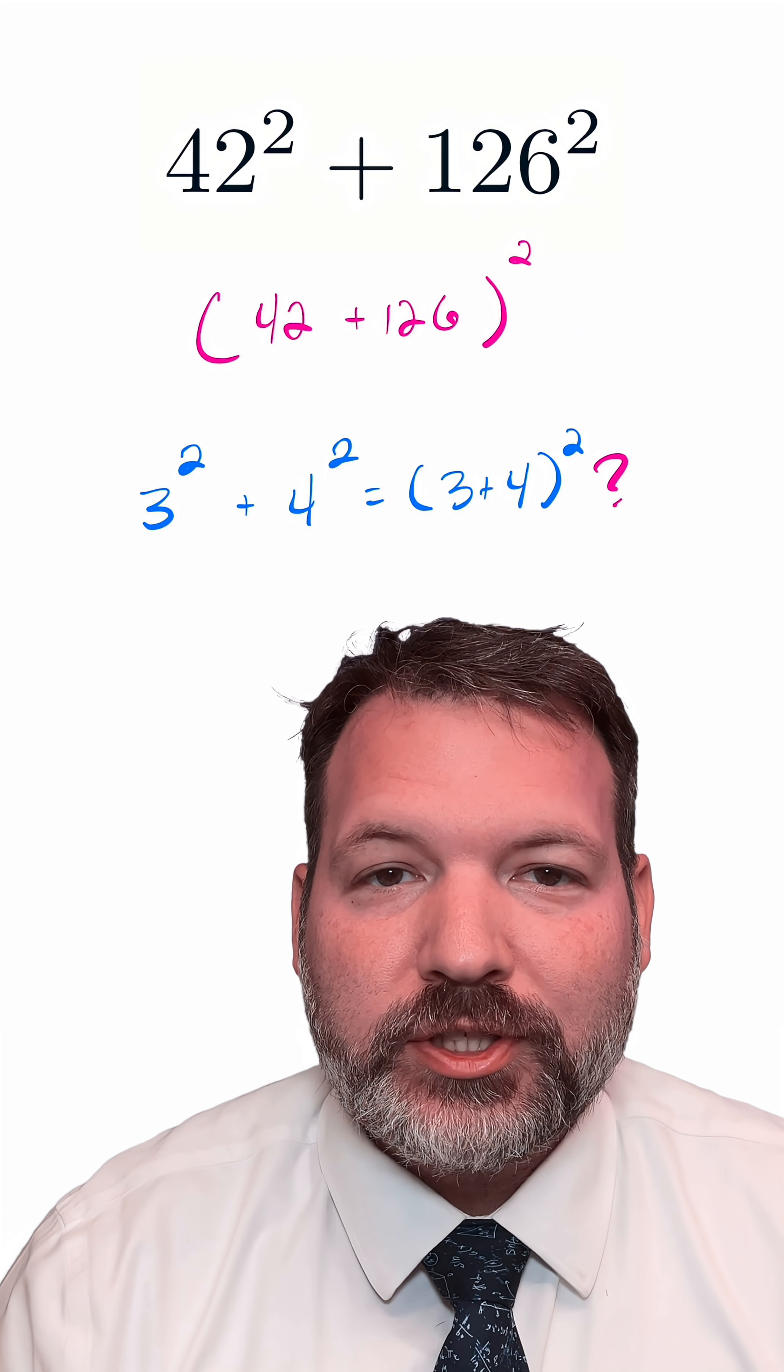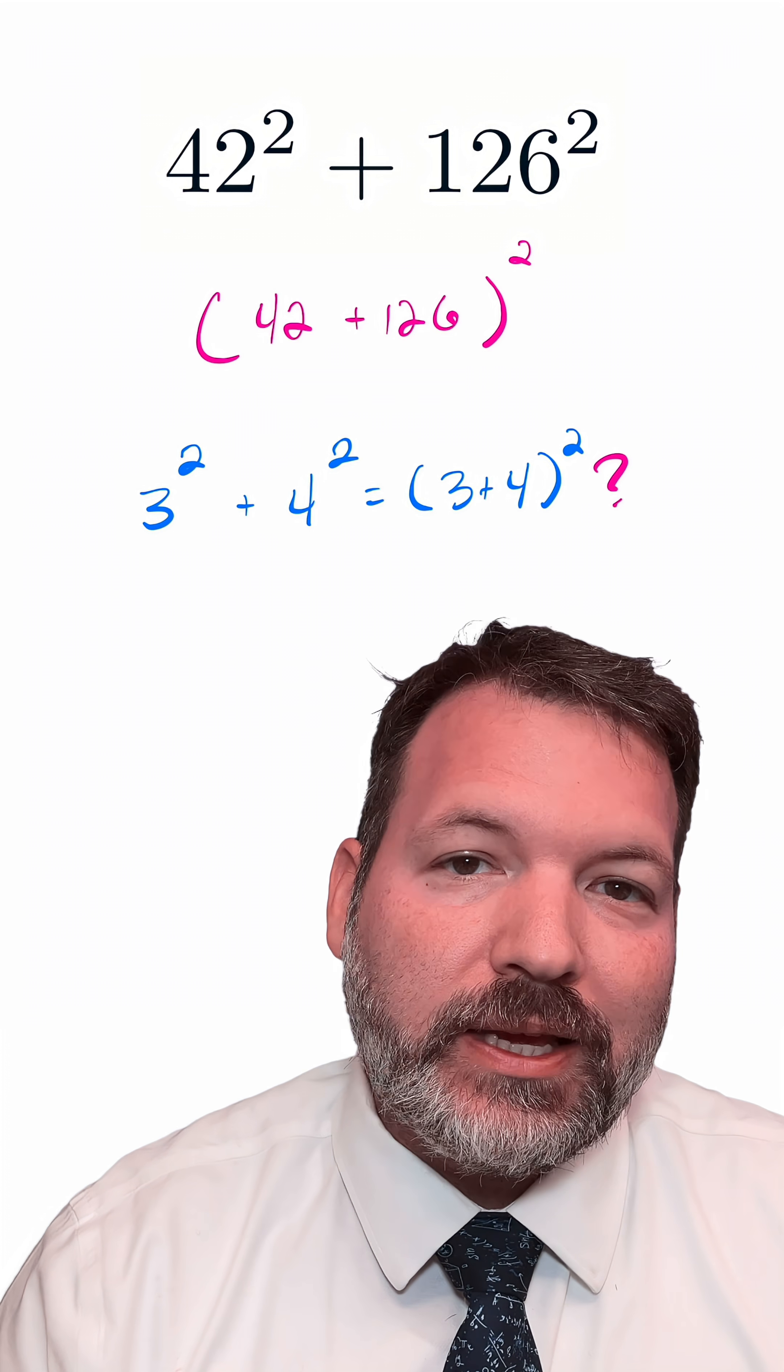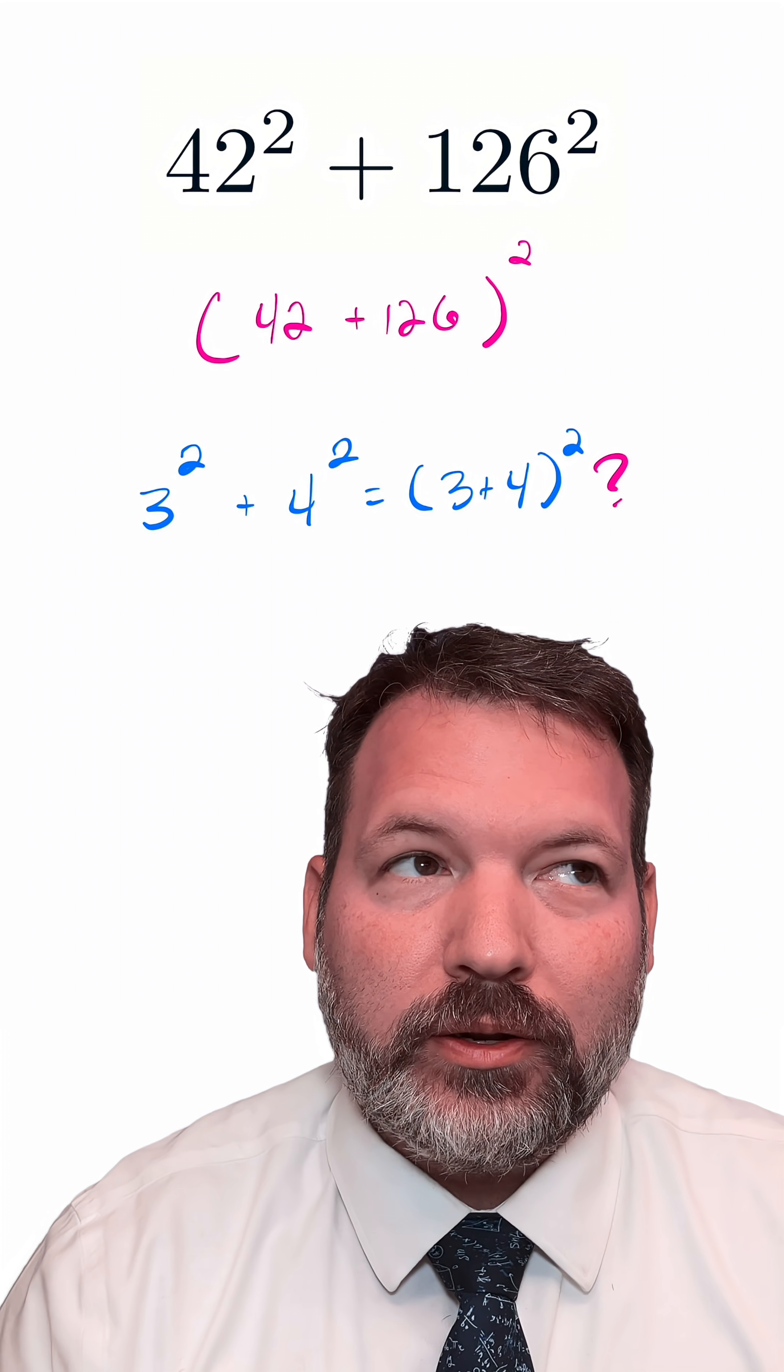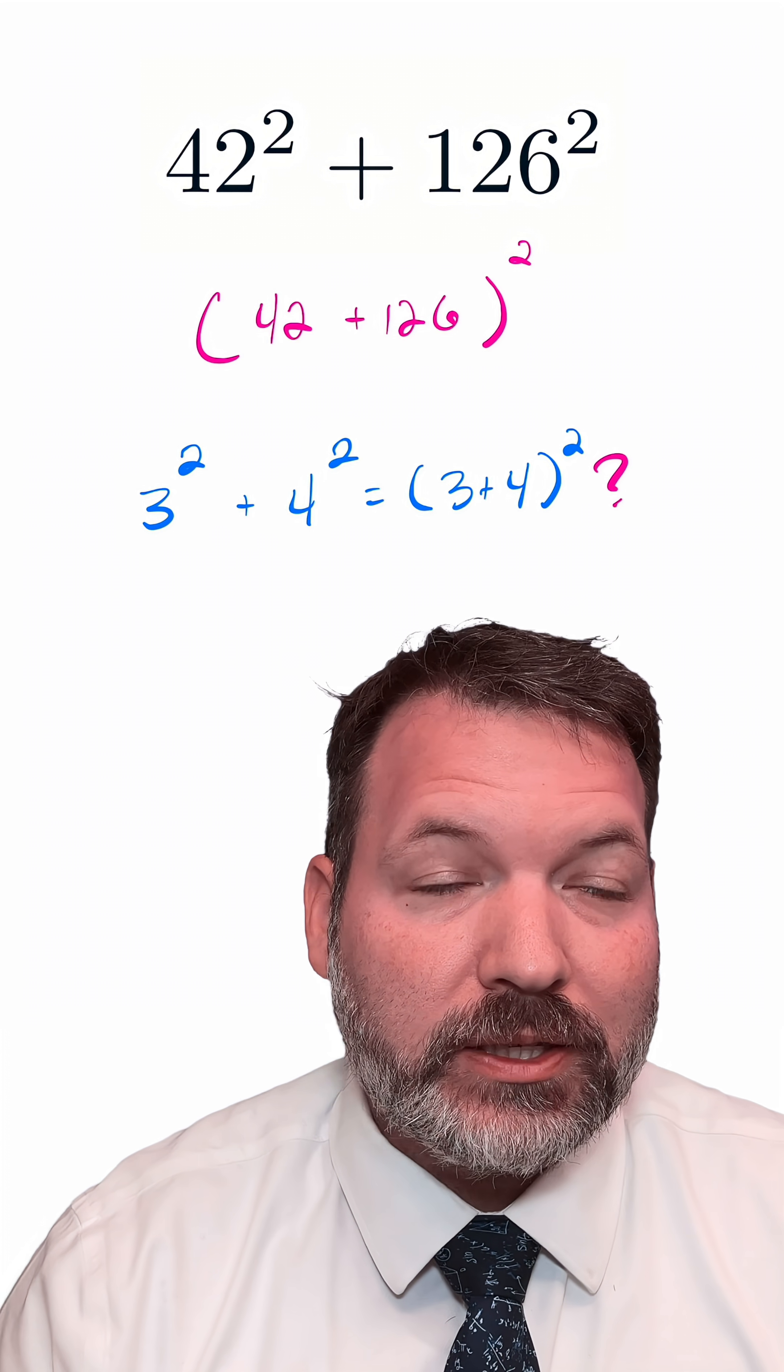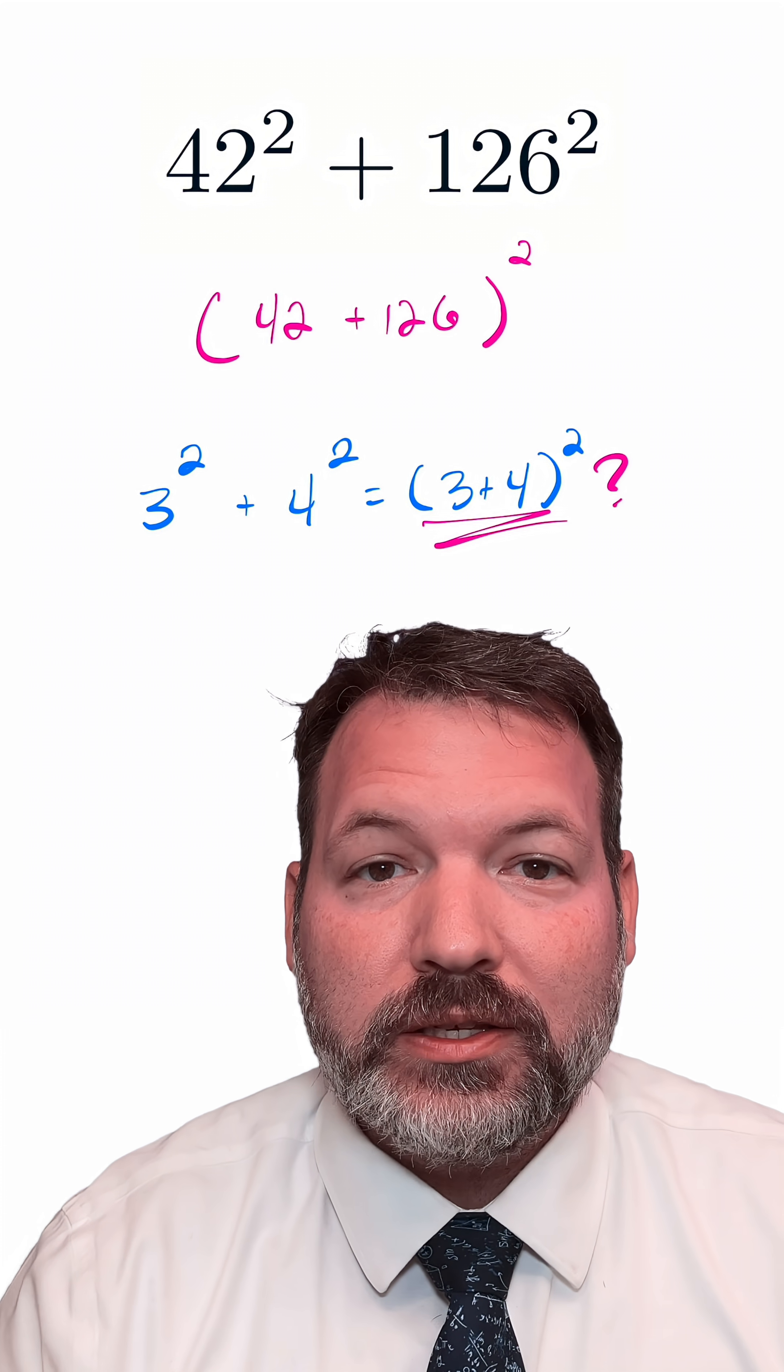But you can quickly verify this won't really work if you test it out with a much simpler example. Using something like 3 and 4, we can see pretty easily 3² + 4², that is 9 + 16, makes 25, definitely does not equal 3 + 4, that is 7 squared.